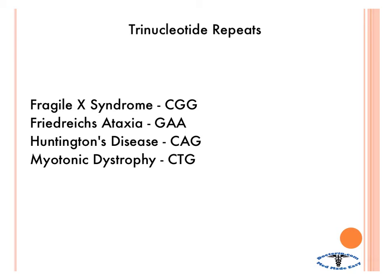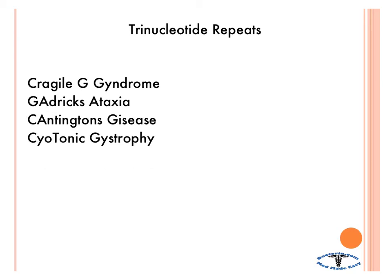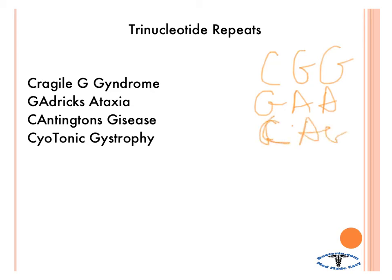So let's cover how we can remember these things. A way I like to remember them is just replace some of the letters with the repeat itself. So 'Cragile G Gyndrome' is CGG, or Fragile X syndrome. 'Gagric's ataxia' — Friedreich's ataxia is GAA. 'Cantington's disease' is Huntington's disease, and that's CAG. And 'CTGotonic dystrophy,' or myotonic dystrophy, is CTG.